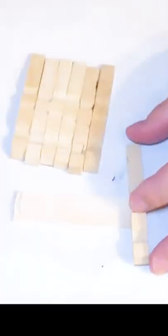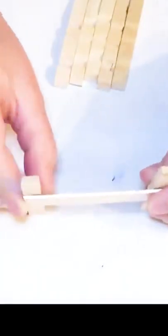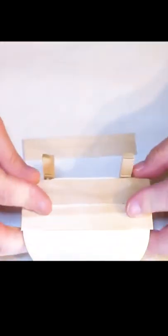I started off with supports for the front of my chair and then I quickly moved on to the back of my chair where I used a popsicle stick to put all of my little clothespin pieces together.